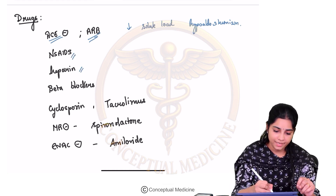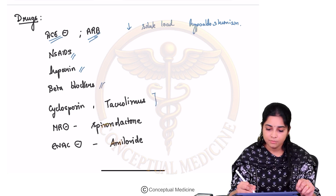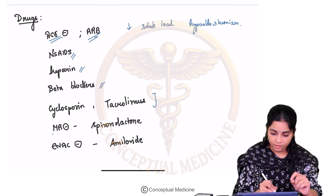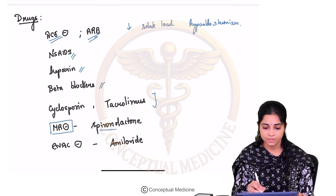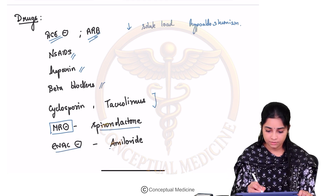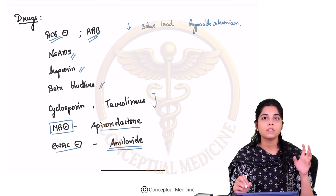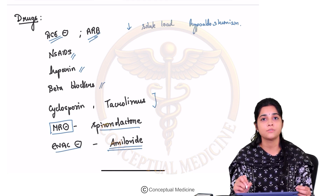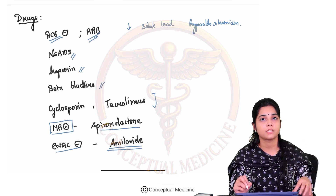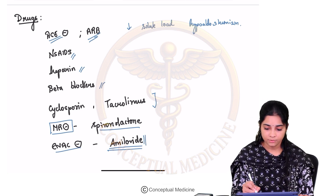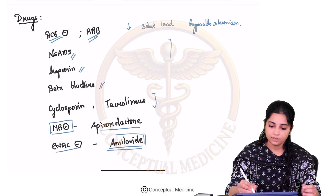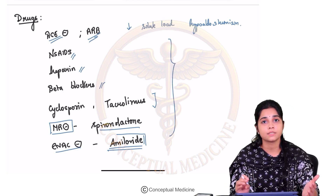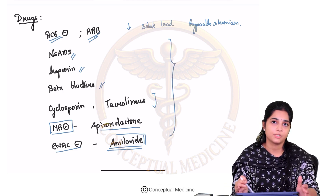Other drugs causing hyperkalemia include NSAIDs, heparin, beta blockers, immunomodulatory drugs like cyclosporin and tacrolimus, mineralocorticoid receptor antagonists such as spironolactone, and ENaC inhibitors such as amiloride. Recall that Liddle syndrome occurs due to mutation of the ENaC channel, so any drug used in its treatment, such as amiloride, can result in hyperkalemia. Always take a thorough drug history when investigating hyperkalemia.